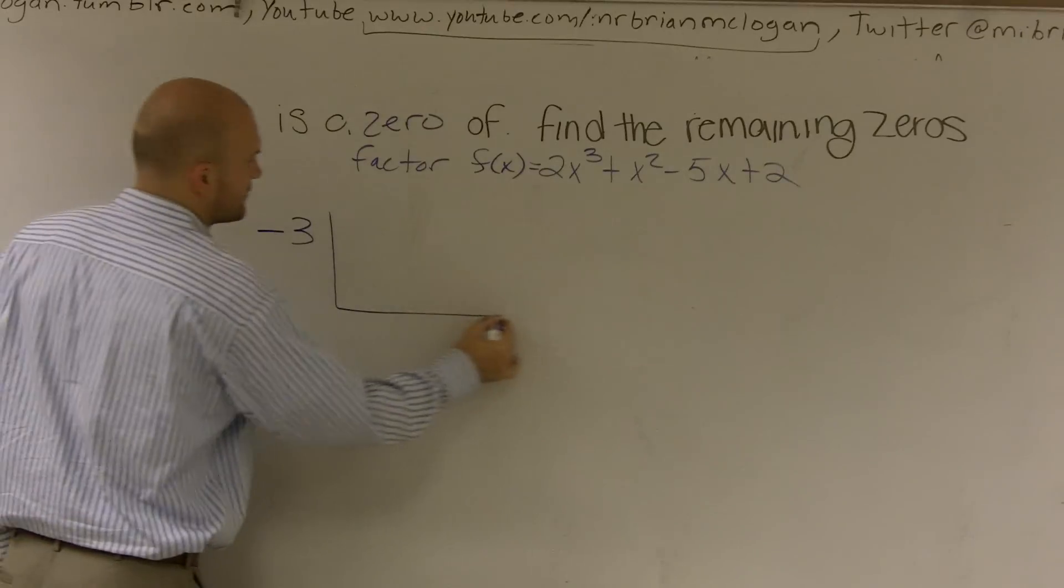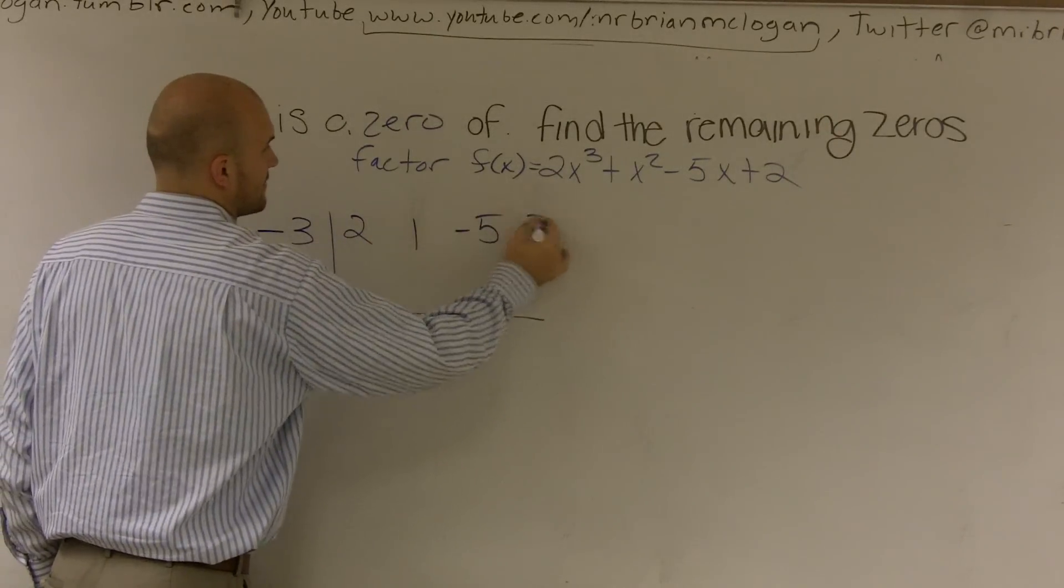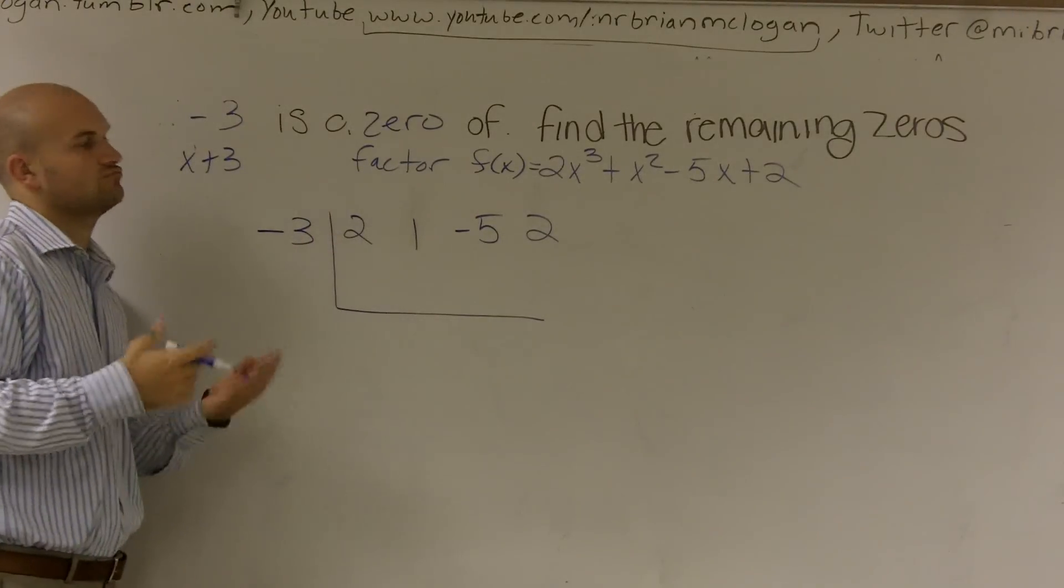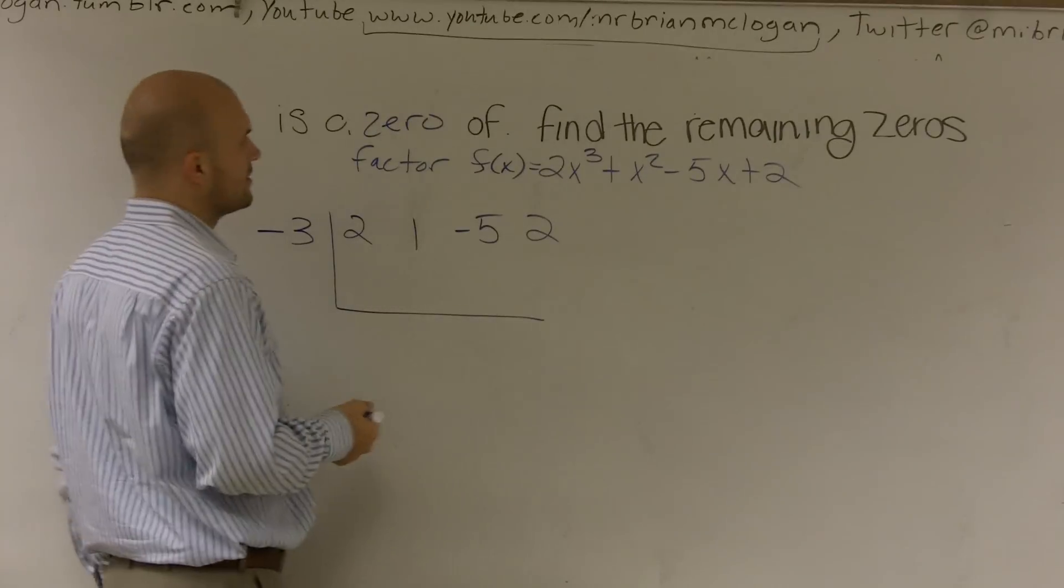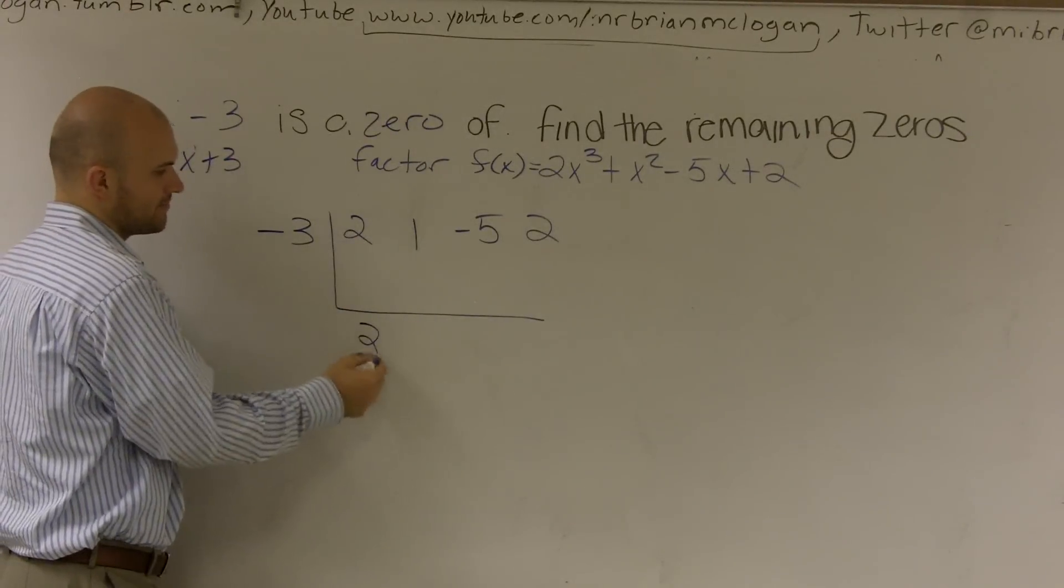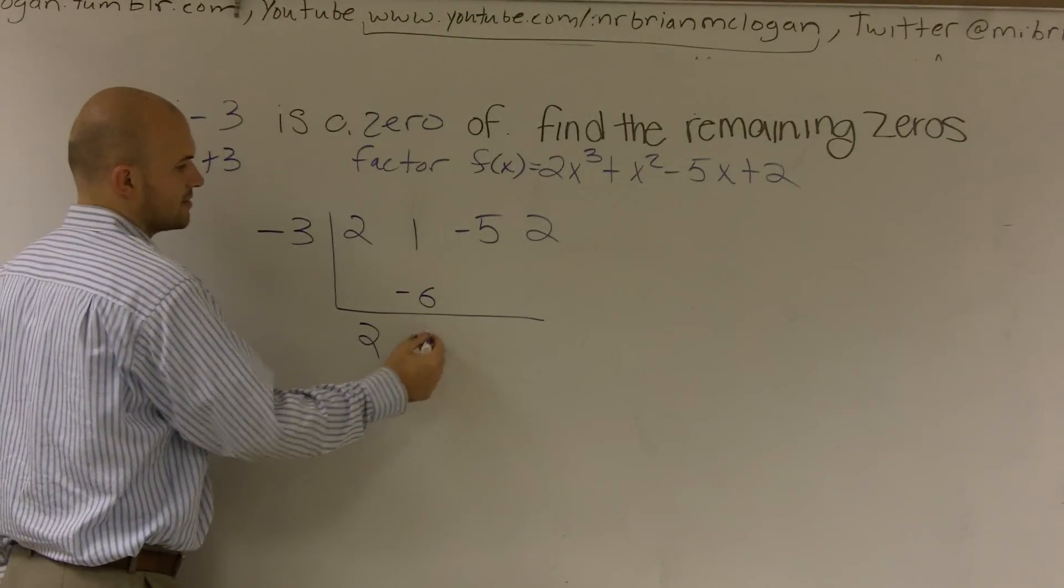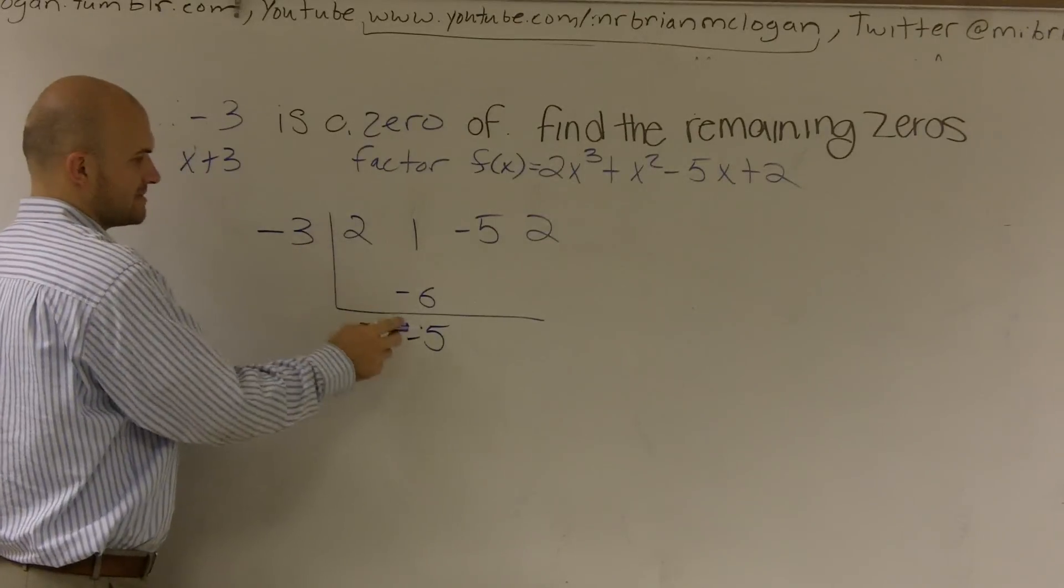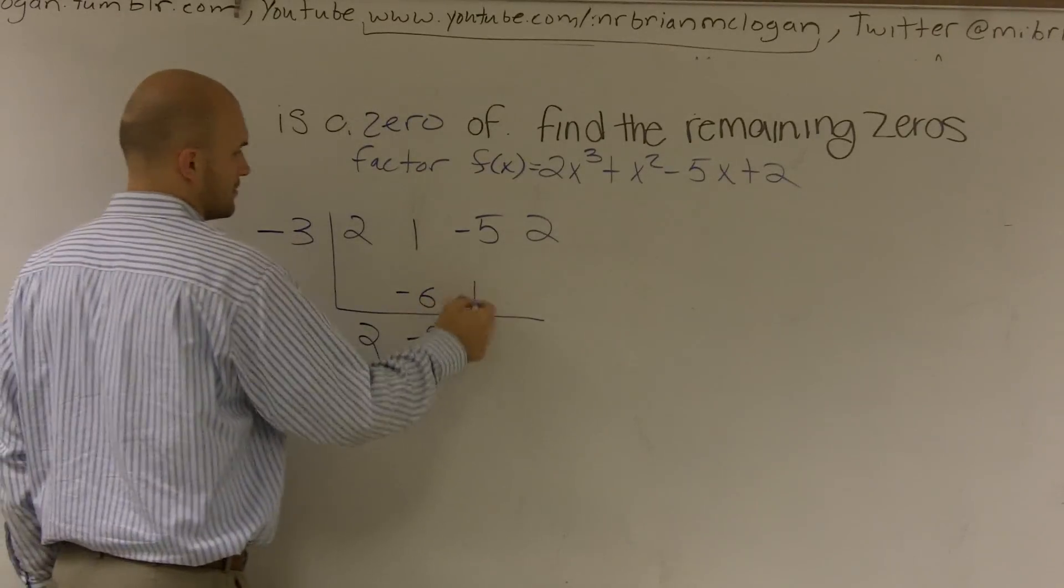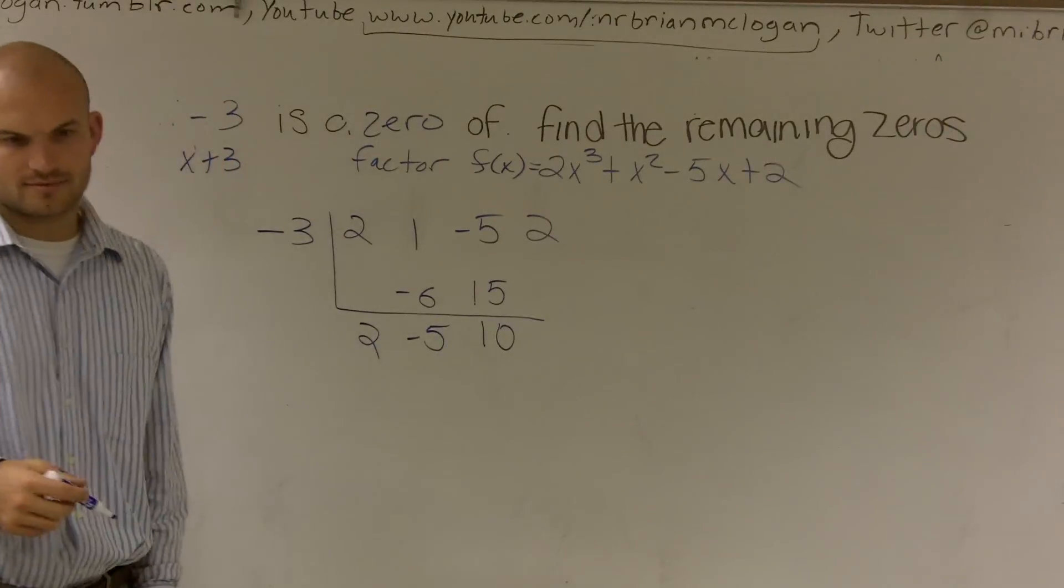So what we do is we like to take any zero that's given to us. Since here we're given a zero of negative 3, I can figure out the remaining 2, 1, negative 5, and 2. Drop down the 2. Negative 3 times 2 is a negative 6. 1 plus negative 6 is negative 5. Negative 3 times a negative 5 is going to be positive 15. This becomes a 10.